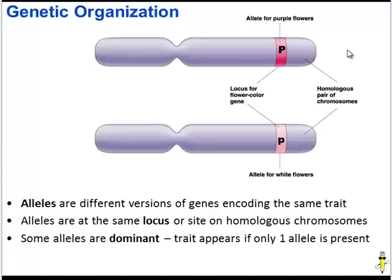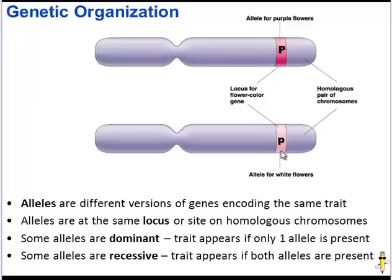Some alleles can be dominant over other alleles. In this homologous pair, there is one dominant allele for purple flowers and one recessive allele for white flowers. This plant would appear purple because the dominant allele is overpowering the recessive one — there only needs to be one dominant allele present. The recessive allele is weaker, so in order for the recessive trait to appear, we need two copies of that recessive allele.